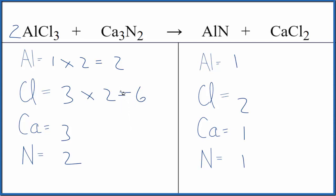Now I could fix the chlorines pretty easily by putting a 3 in front of the calcium chloride. 2 times 3 gives us 6, and 1 times 3 balances the calcium atoms as well.